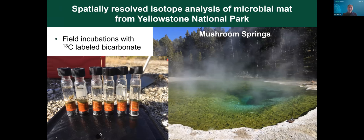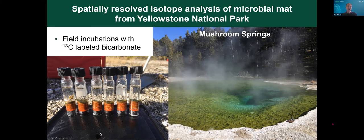Moving on, I want to show a few different examples of where we've used laser ablation IRMS to help us understand some environmentally relevant processes. The first example comes from Yellowstone National Park — Mushroom Spring in the lower Geyser Basin, not too far from Old Faithful. One of the reasons this is such a famous spring is that Brock did a lot of work here and actually isolated one of the strains of Thermus aquaticus from the system, which is where we get Taq polymerase, which gave rise to PCR and, in effect, the genomic revolution.